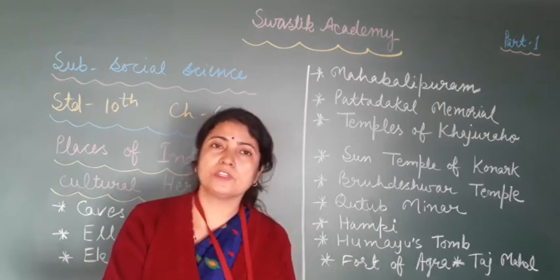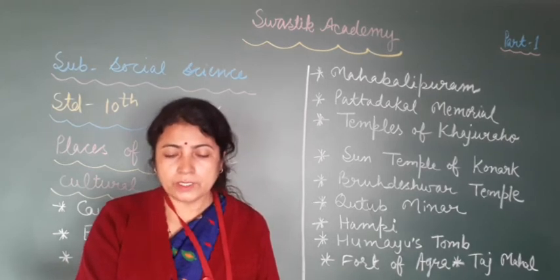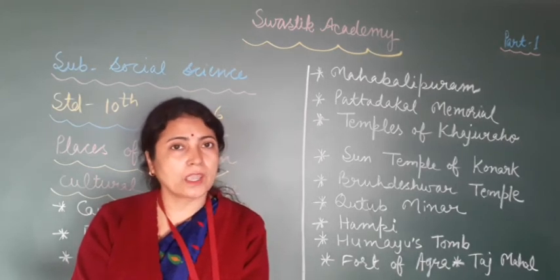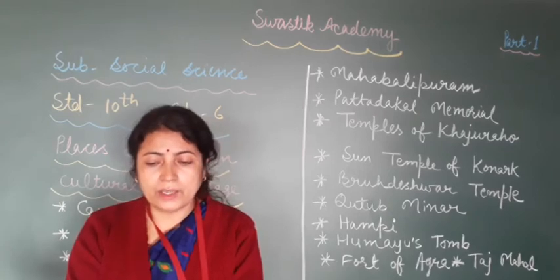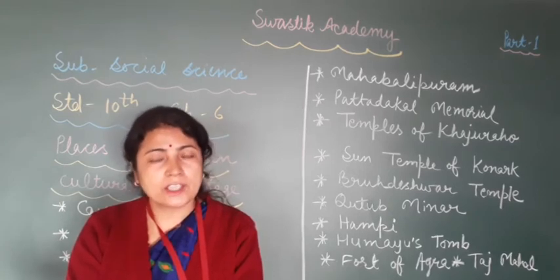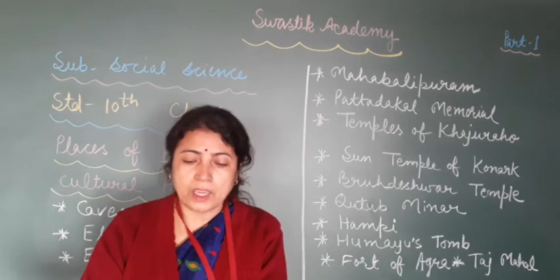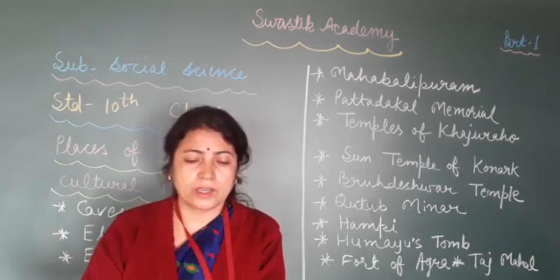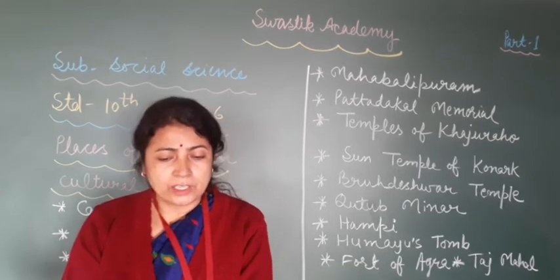The caves are also divided into two categories: Chaityas and Viharas. Cave numbers 9, 10, 19, 26 and 29 are Chaityas.